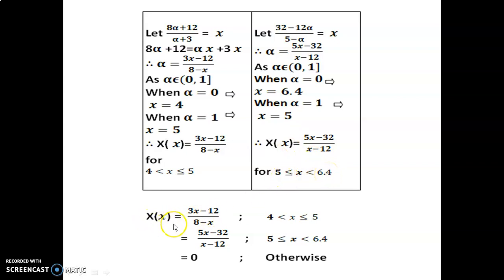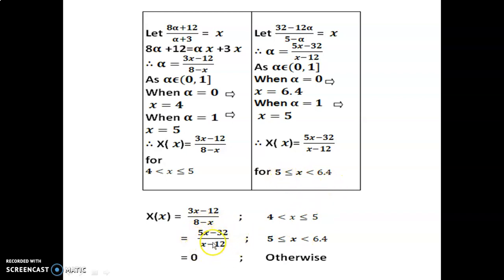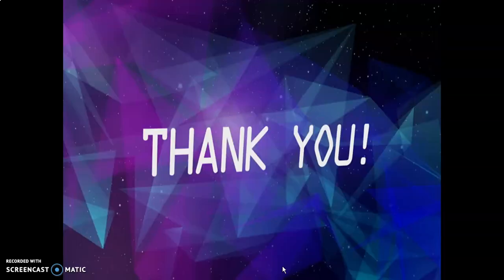Thus X(x) has the first membership function for the range 4 to 5, the second membership function for the range 5 to 6.4, and equals 0 otherwise. Thank you.